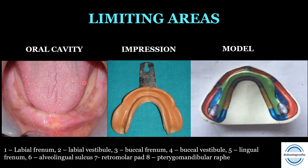Posteriorly there is a pear-shaped pad called the retromolar pad, recorded as the retromolar fossa in the impression. There is also an attachment of the pterygomandibular raphe on the distal-most side, which we will discuss in detail. It is recorded as a notch on the distal part of the impression, and it should be relieved while making the denture on the distal part of the mandibular ridge.